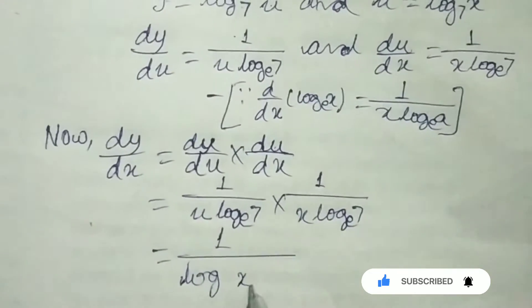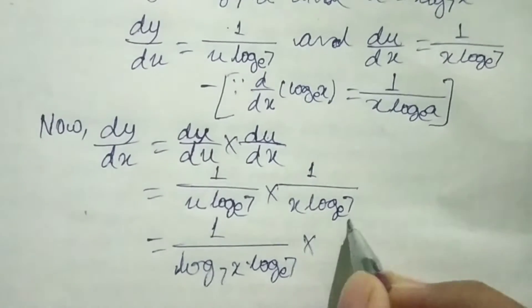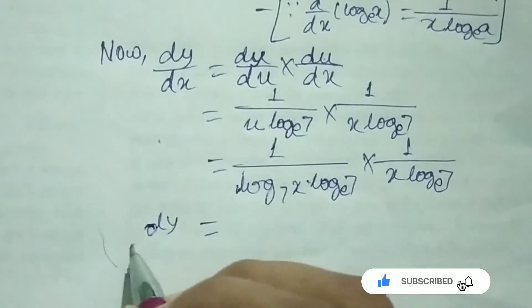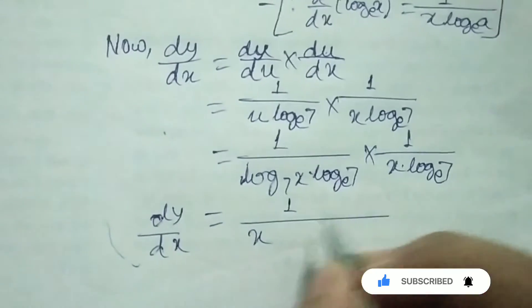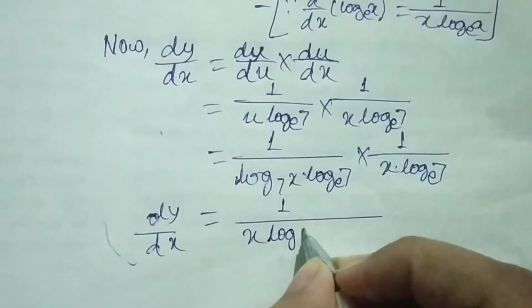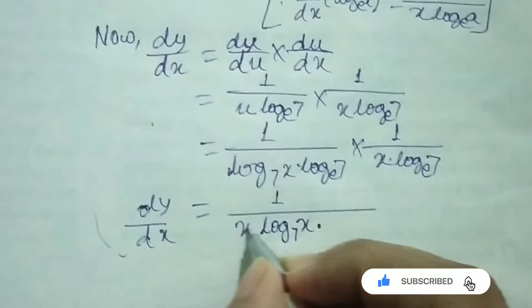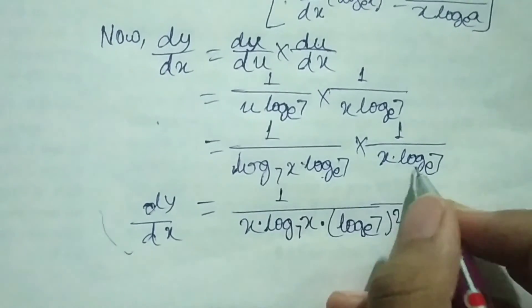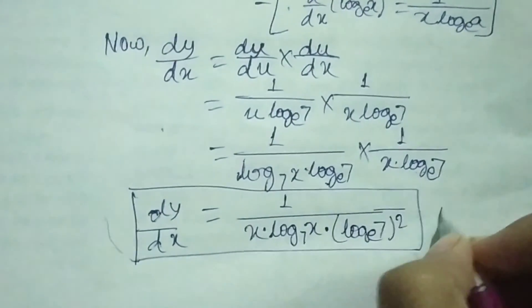So our required answer will be 1 upon x log x base 7 into log 7 base e, whole square. This is our required answer.